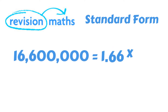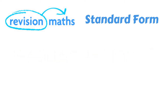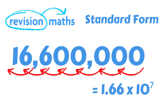Now let's try this with an even larger number. Let's take 16,600,000 as our example. In standard form, this could be written as 1.66 times 10 to the power of 7, because the decimal place has been shifted 7 times to the left of the 1.